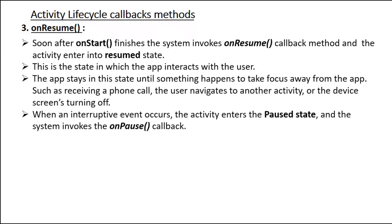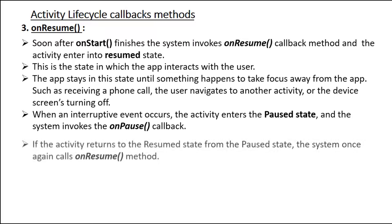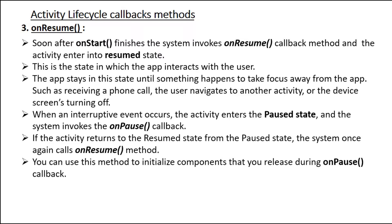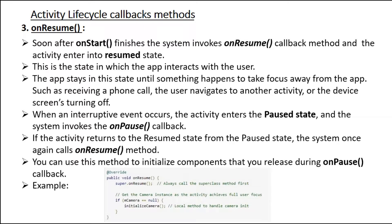When an interruptive event occurs, the activity enters the paused state and the system invokes the onPause callback. If the activity returns to the resumed state from the paused state, the system once again calls onResume. You can use this method to initialize components that you released during onPause. Here is an example: in the onResume method you must always call the superclass method first, then initialize a camera object by calling a local method that handles the camera.